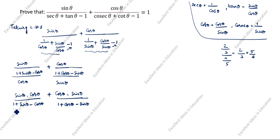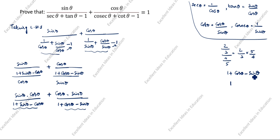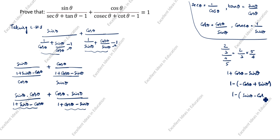The denominator of the first term is (sinθ − cosθ) and the denominator of the second term is (cosθ − sinθ). We rewrite (cosθ − sinθ) to match: (1 + cosθ − sinθ) becomes −(sinθ − cosθ − 1), so the second denominator becomes (1 − sinθ + cosθ), which we write as (1 − (sinθ − cosθ)).